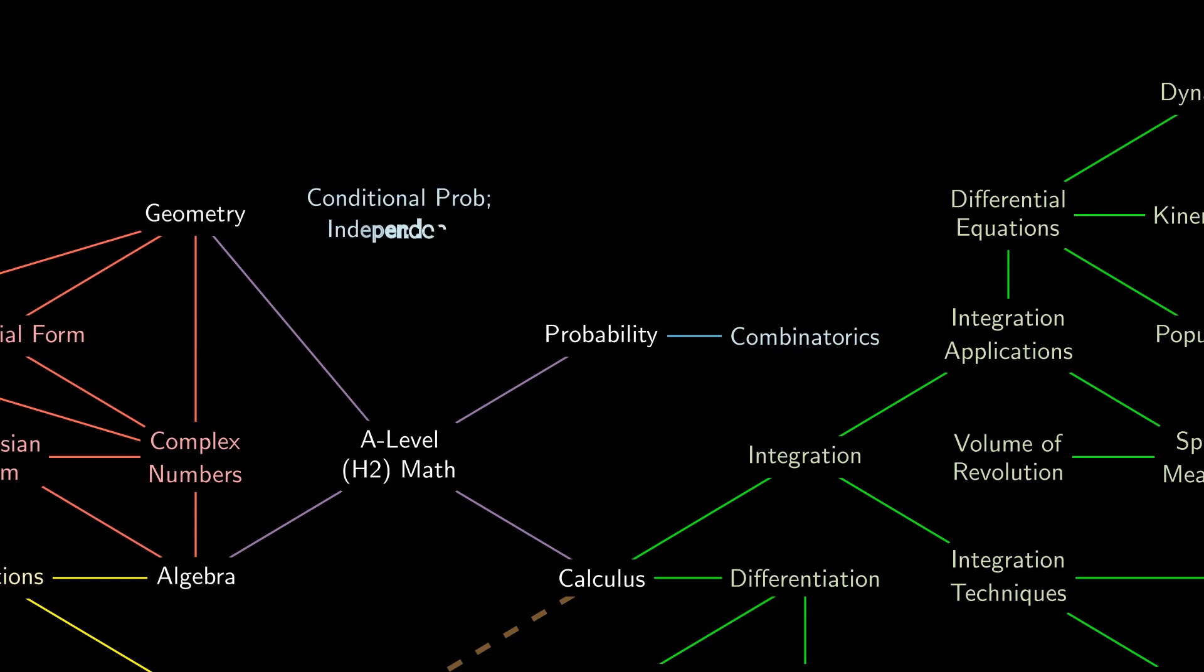By making sense of conditional probabilities and independence, we can even talk about the notion of random variables. There are two types of random variables, discrete random variables, and continuous random variables.